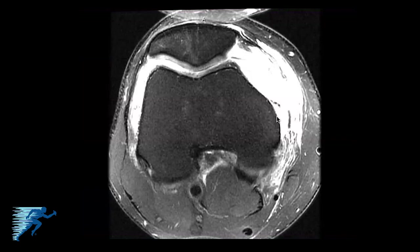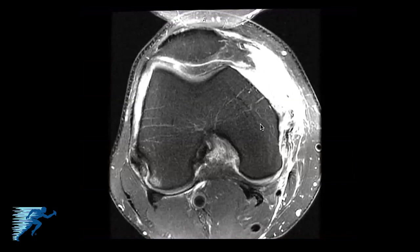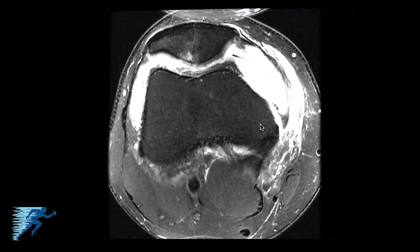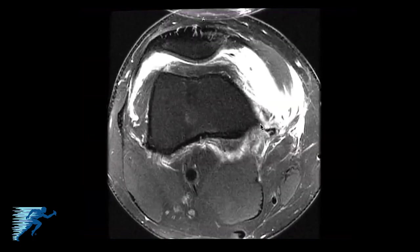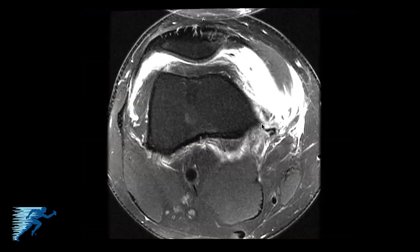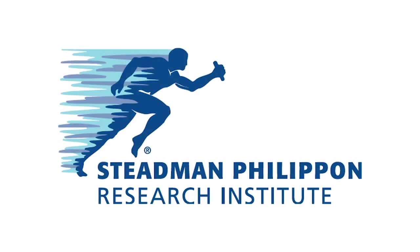This is where the normal attachment site of the superficial MCL would be up here. We just see a hint of a little bit of the attachment site still attached on the femur, but it's been otherwise completely disrupted as we course more proximally. And then as we get up here, we start to see more where the adductor magnus tendon would be attached.